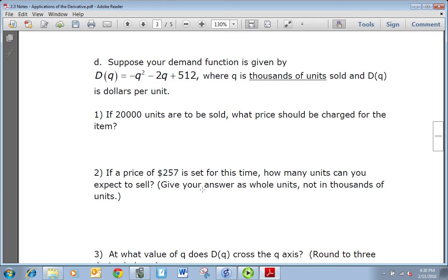Suppose your demand function is given by D(q) = -q² - 2q + 512, where q is in thousands of units sold and D(q) is in dollars per unit. If 20,000 units are to be sold, what price should be charged for the item? It's in thousands of units, so our value is really just 20 because 20 times a thousand is 20,000. So we're just trying to find D(20). So it's going to be -20² - 2(20) + 512, and when you do that you get 72, so $72 should be charged.